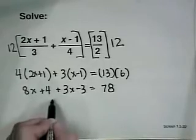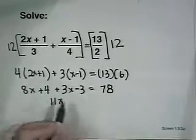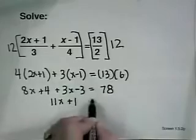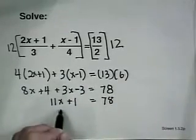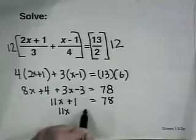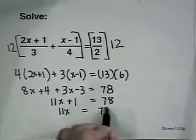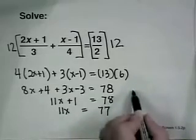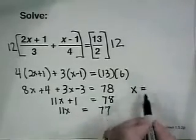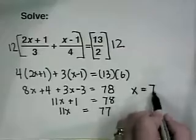We'll combine like terms: 11x + 1 equals 78. Then 11x equals 77, and dividing both sides by 11 will give us our answer, x equals 7.